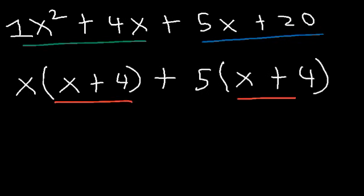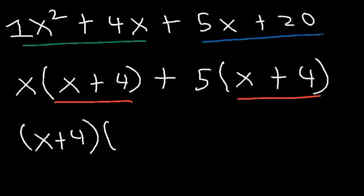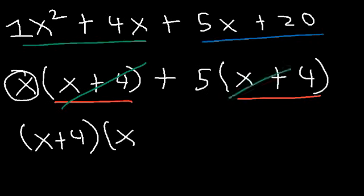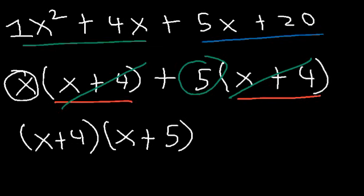If you see a common factor — in this case x plus 4 — it tells you you're on the right step. You want to factor out the GCF, which is x plus 4. If we take out x plus 4, we have x left over from the first term and positive 5 left over from the second term. So the answer is x plus 4 times x plus 5.